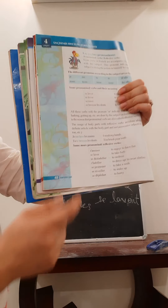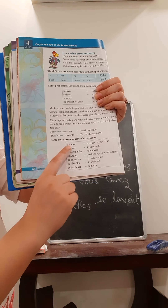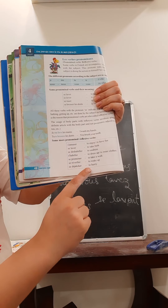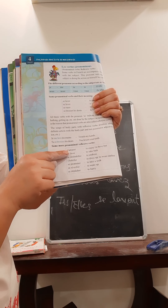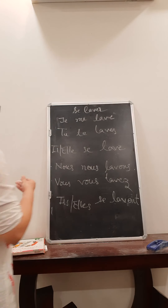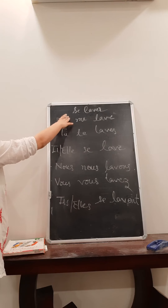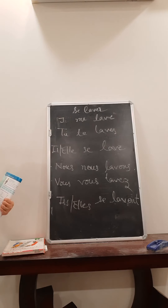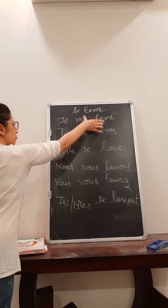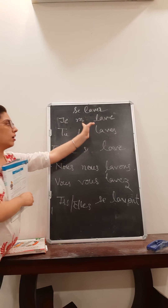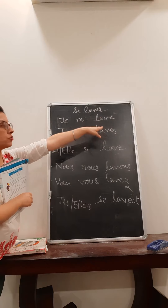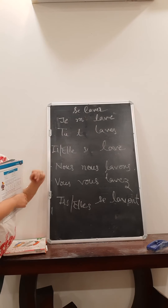You have been given a list of pronominal verbs in your book. One thing which is different is here: if your verb is starting with a vowel, we generally remove the 'e' from the pronoun, because the conjugation is coming after the pronoun. So you need to remove the 'e' from the pronoun only.